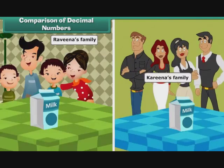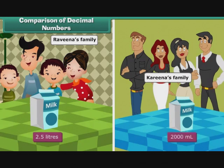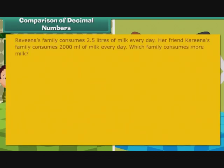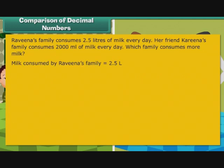Let us look at one more problem. Ravina's family consumes 2.5 litres of milk every day. Her friend Karan's family consumes 2000 ml of milk every day. Which family consumes more milk? Milk consumed by Ravina's family is equal to 2.5 litres, that is 2 litres and 500 ml.